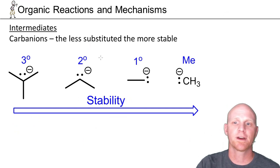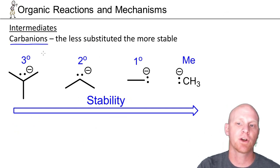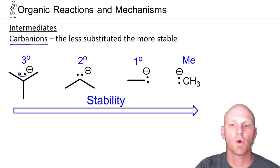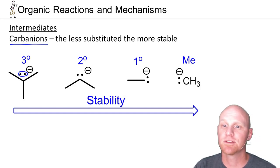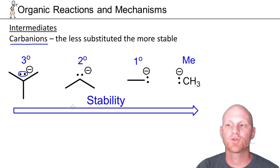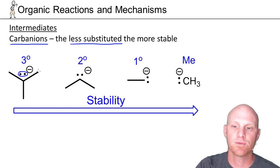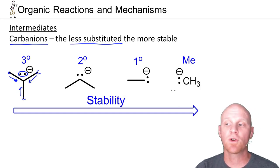The last type of intermediate we'll look at are called carbanions, when a carbon has a negative charge. Carbon's got a negative charge, you'll see it has a lone pair of electrons and three bonds. This is much less common as an intermediate than either the carbocation or radical. We find that you've got the exact opposite trend in stability. Here you want the less substituted carbanion. Instead of being electron deficient like a carbocation or radical, carbanions are actually electron rich. They have too many electrons. The more carbons they're bonded to, which can donate electron density towards them, the less stable they become. So the less substituted the carbanion, the more stable it becomes, opposite of what we saw with carbocations and radicals.